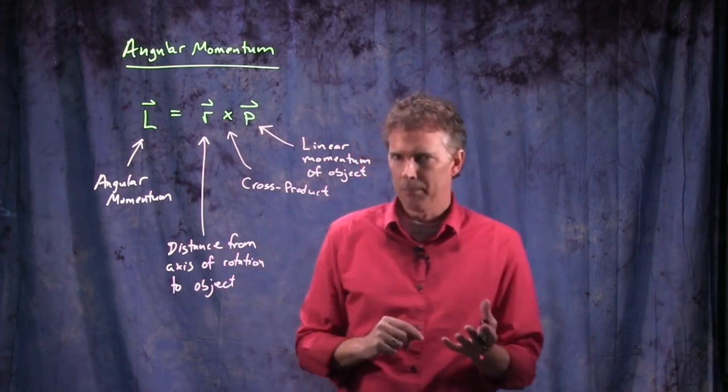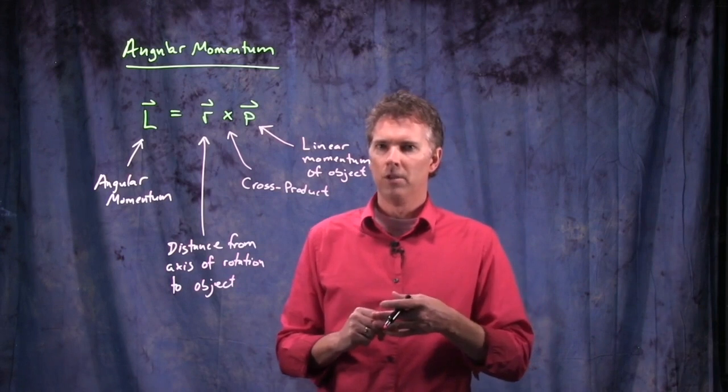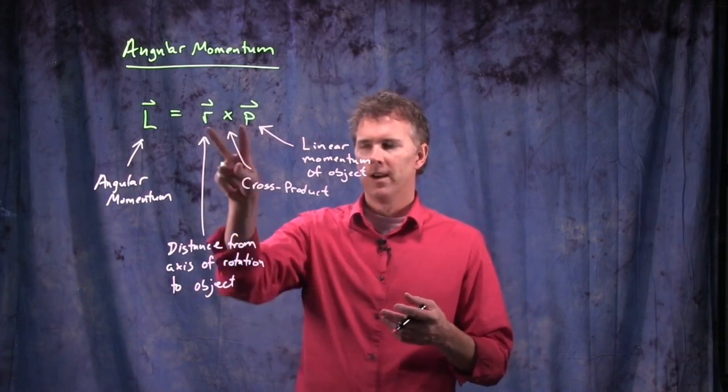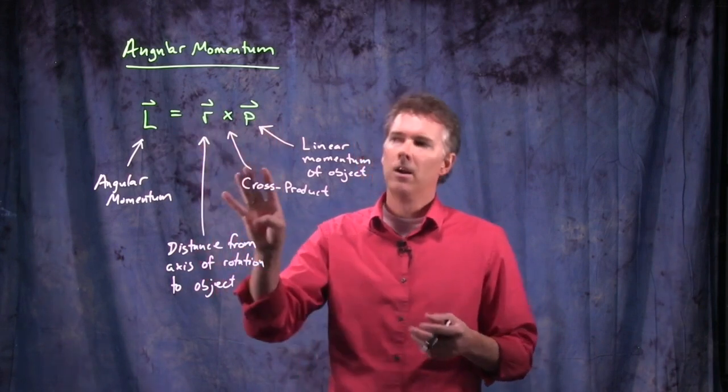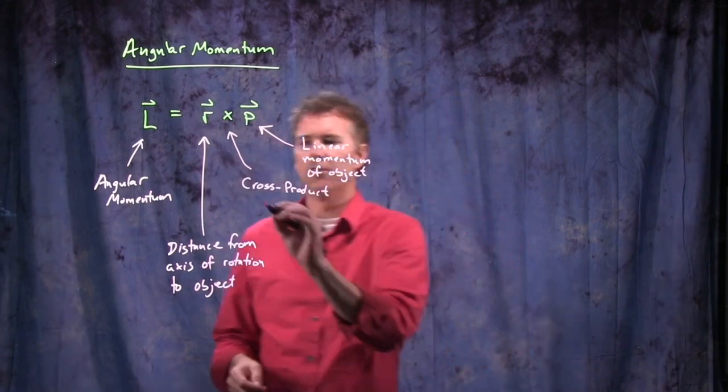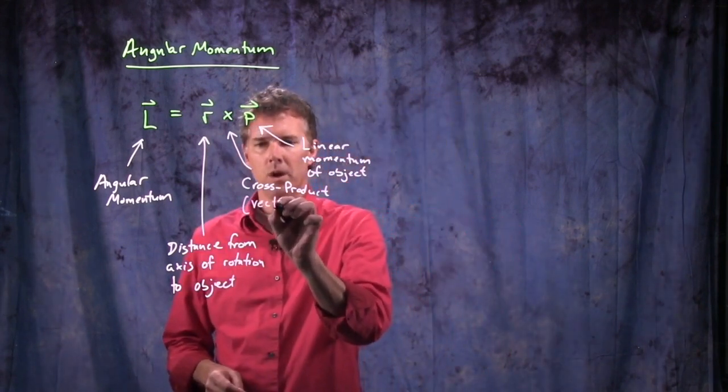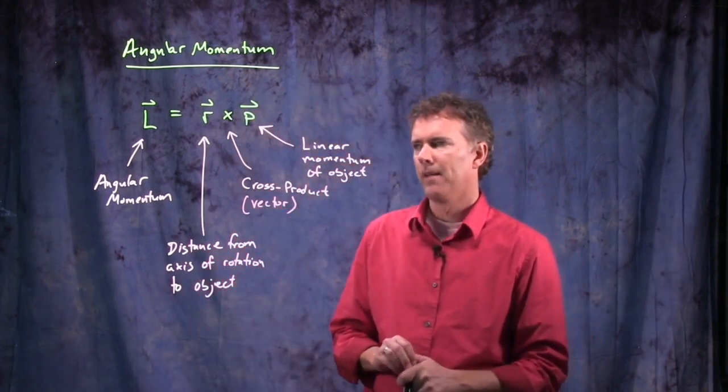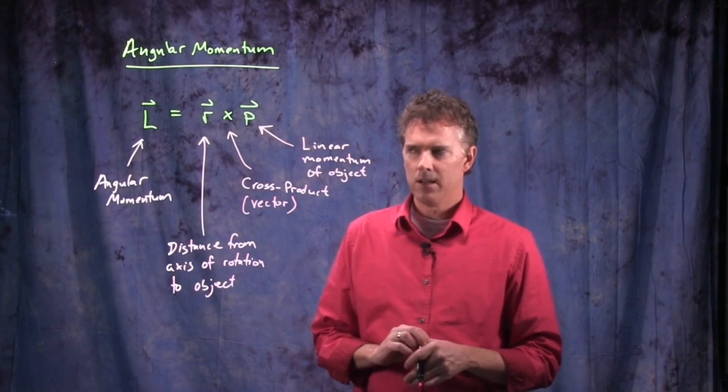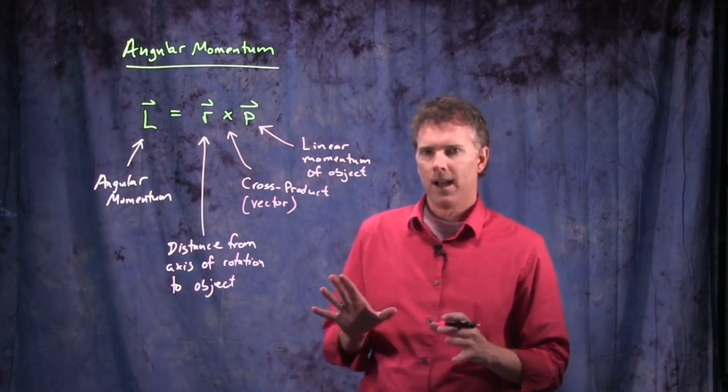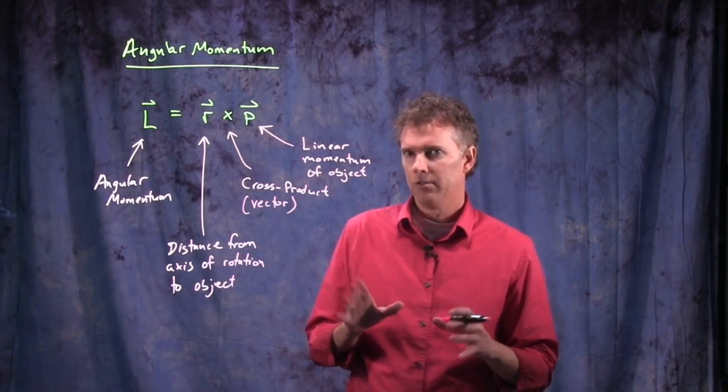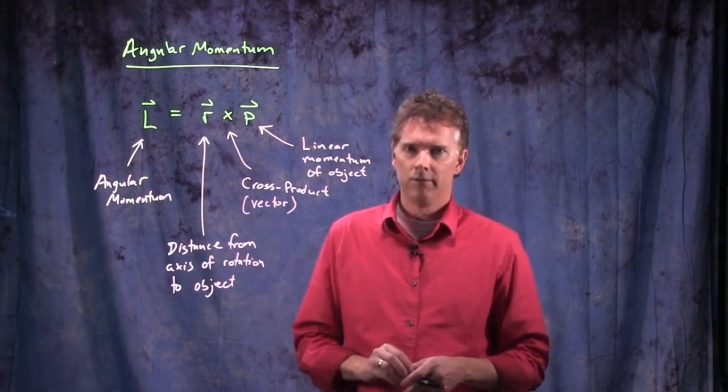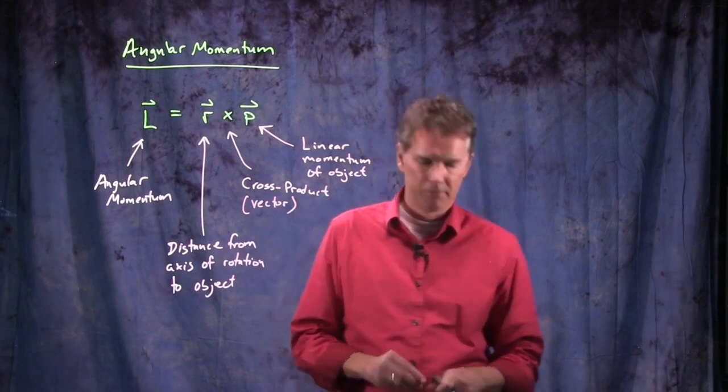Remember when we talked about the dot product, the end result was a scalar, right? Two vectors dotted together would give us a scalar, but now the cross product is in fact a vector quantity, and that's why the L has a vector on top of it over on the left side. So this is what we need to understand, and let's identify first what the cross product is, and then how to apply it to various angular momentum problems.